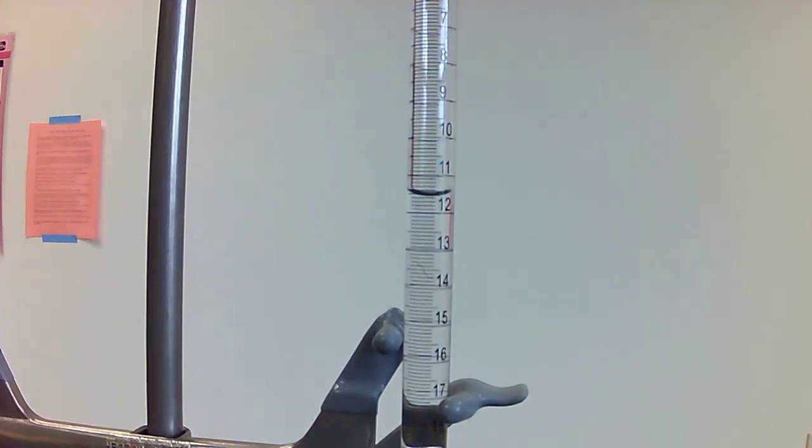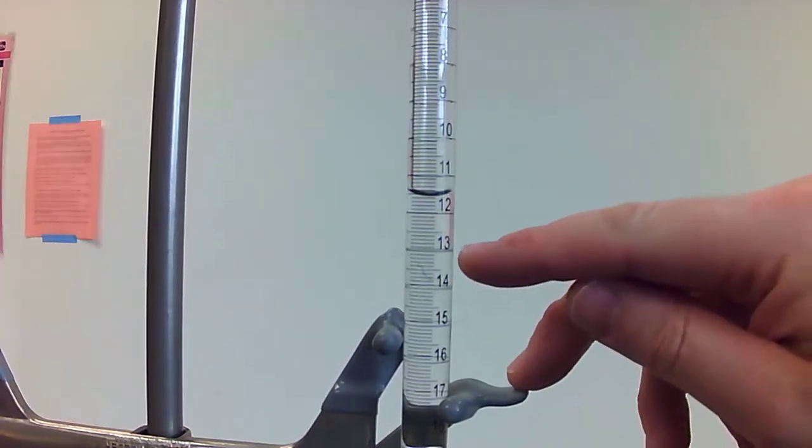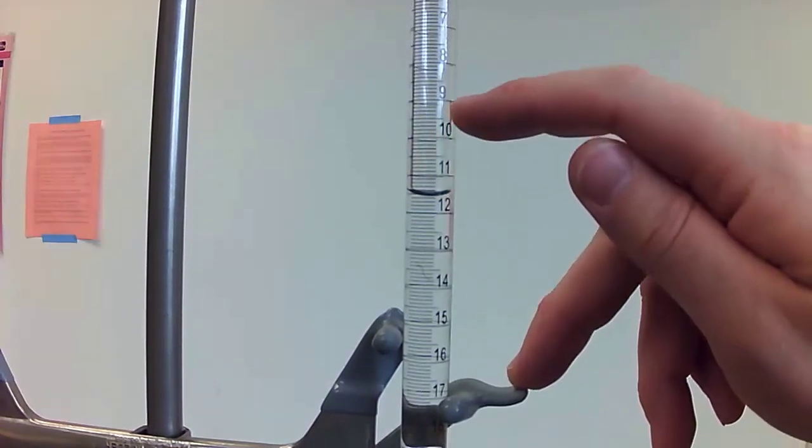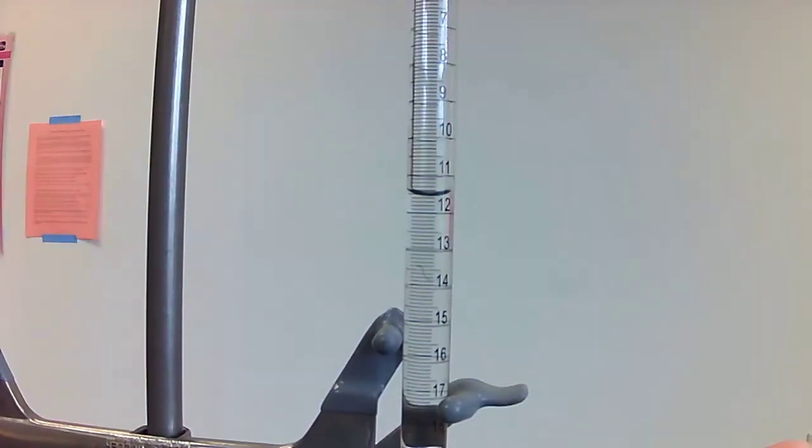When you're measuring, the first thing you have to do is move your eyes so that they're on the level of the liquid in the burette. You can tell you're there when the line, the bigger line, looks straight. If you look at the ones farther down, you can see the front edge and the back edge of this line.